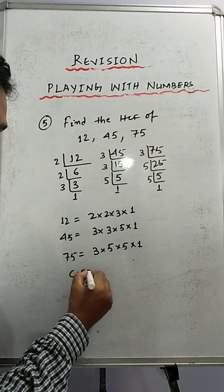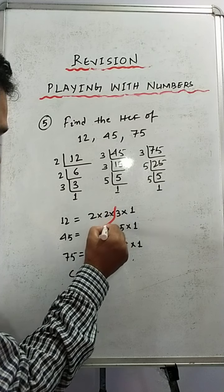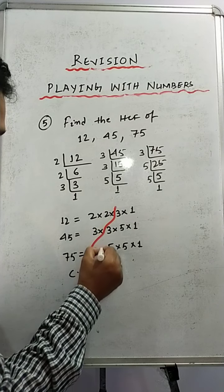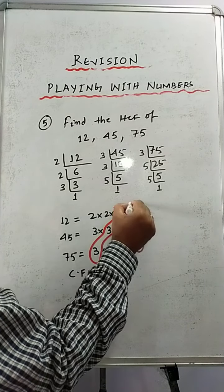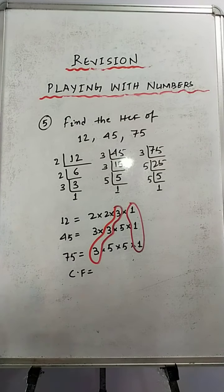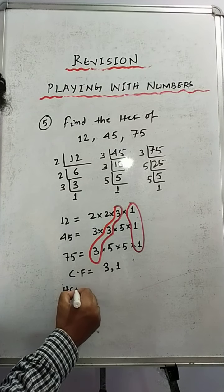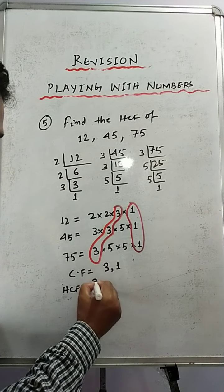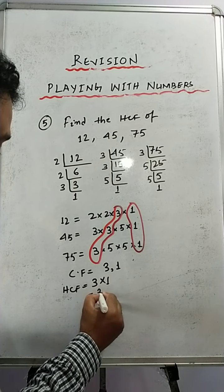Now first of all we will find the common factors. What are the common factors? You see that 3 is present — that is the common factor — and 1 is also the common factor. We don't see any other common factors. So the common factors are 3 and 1.